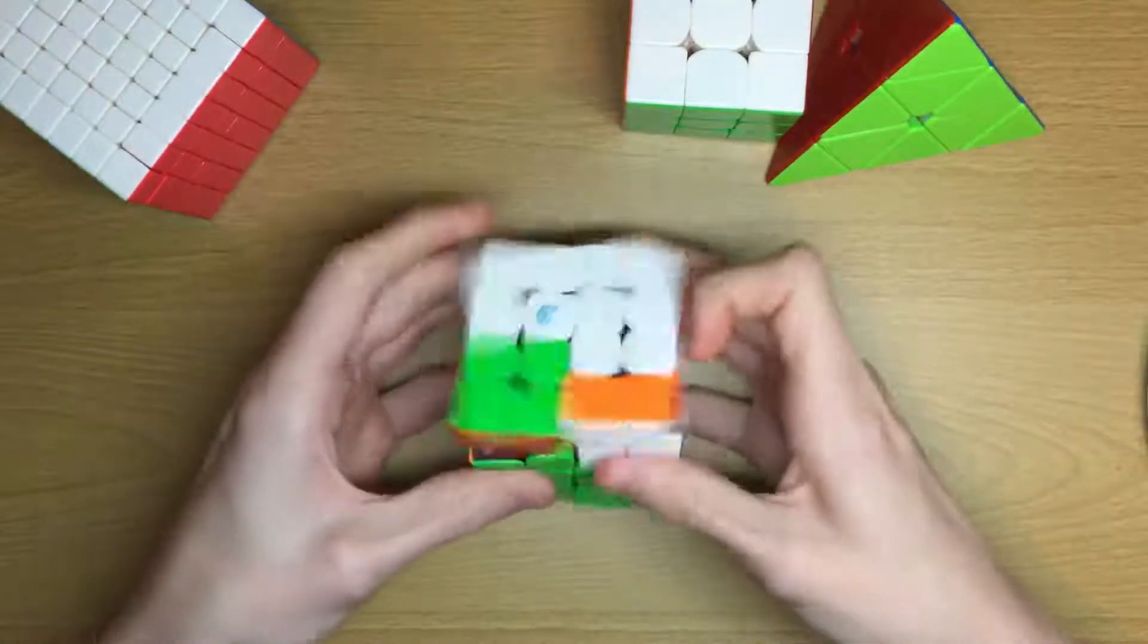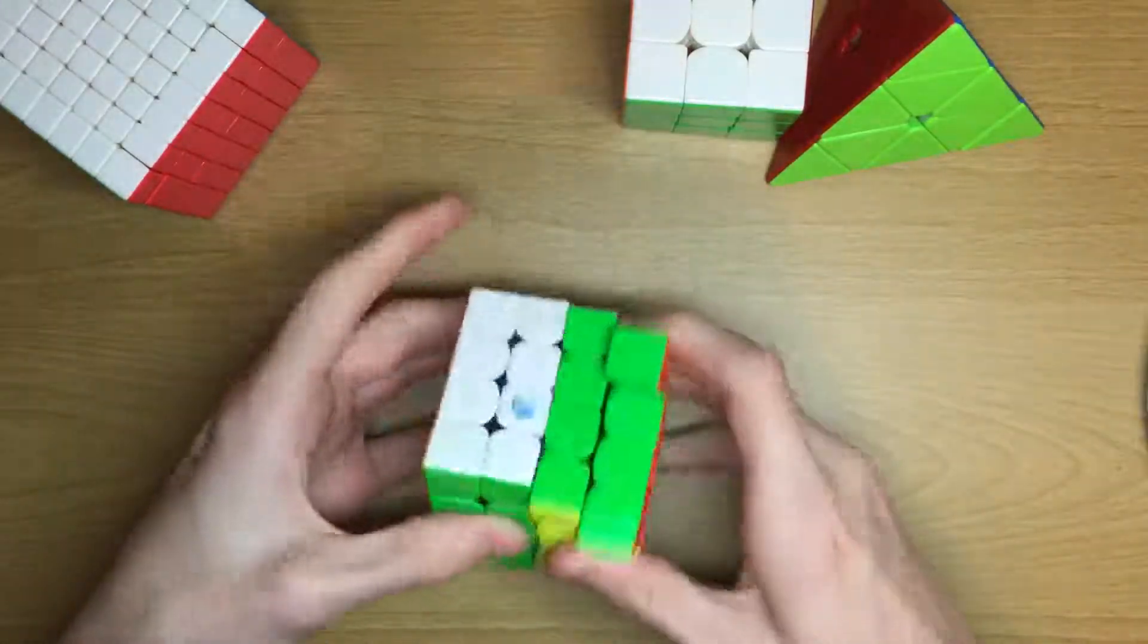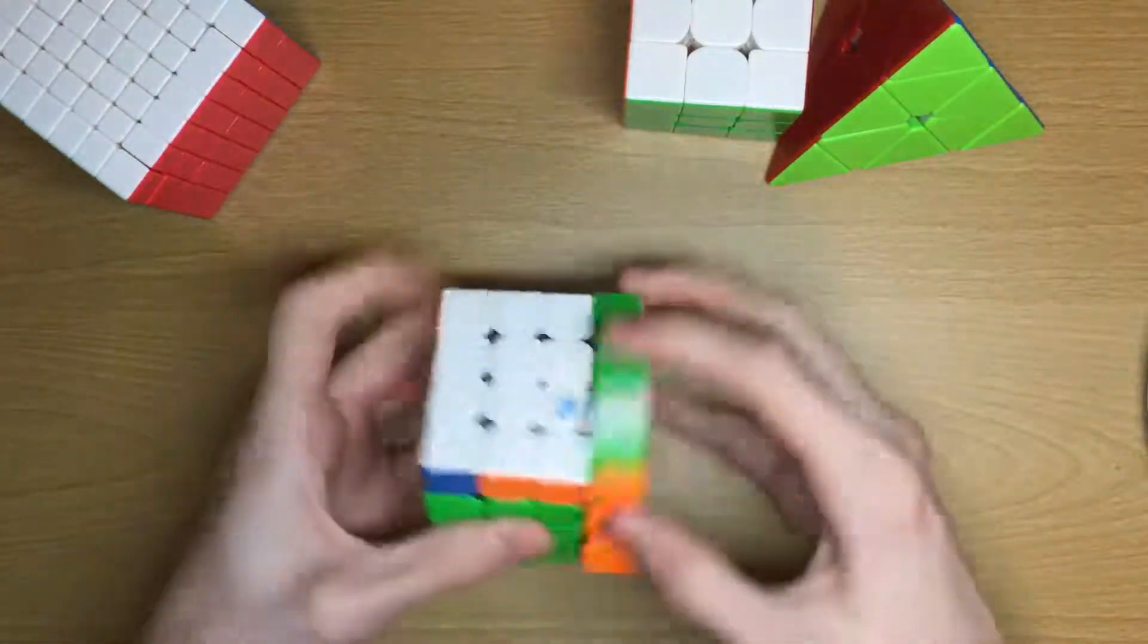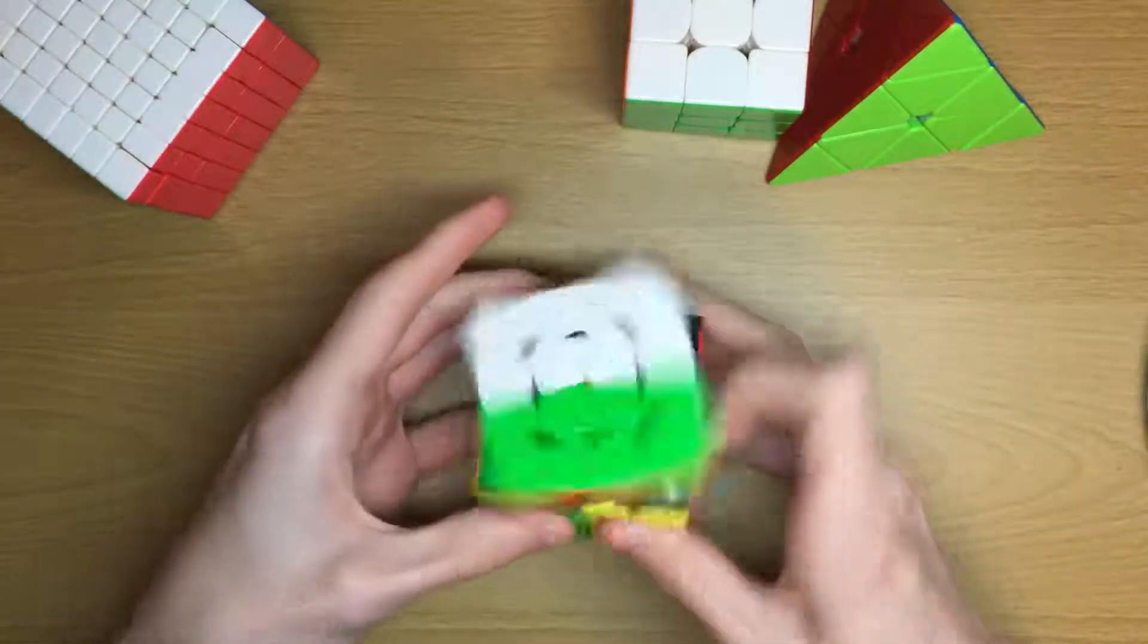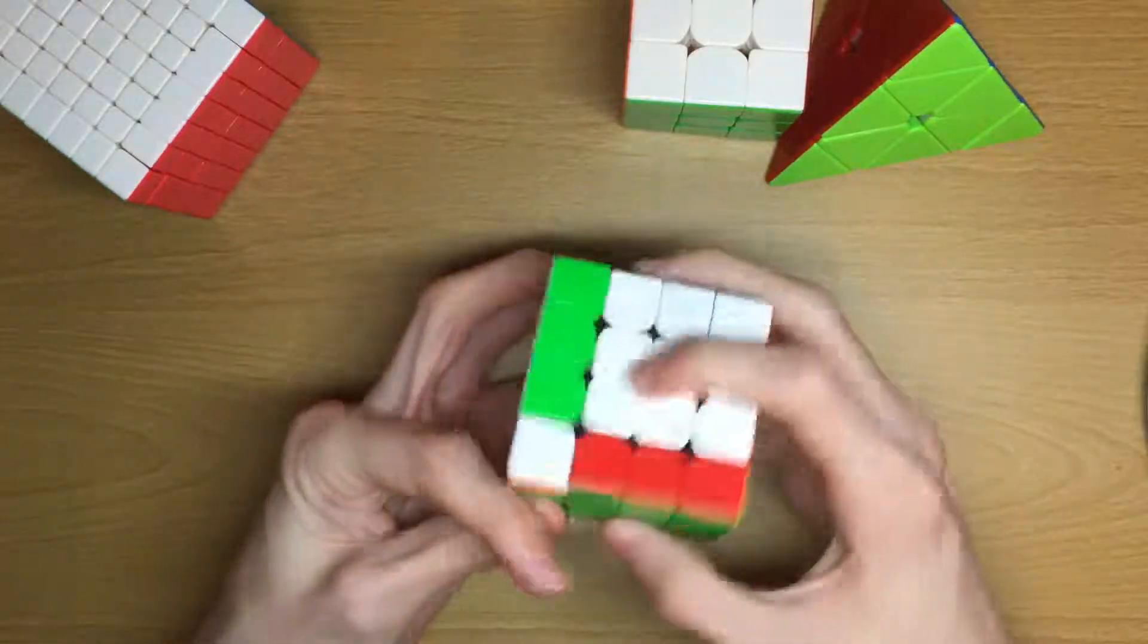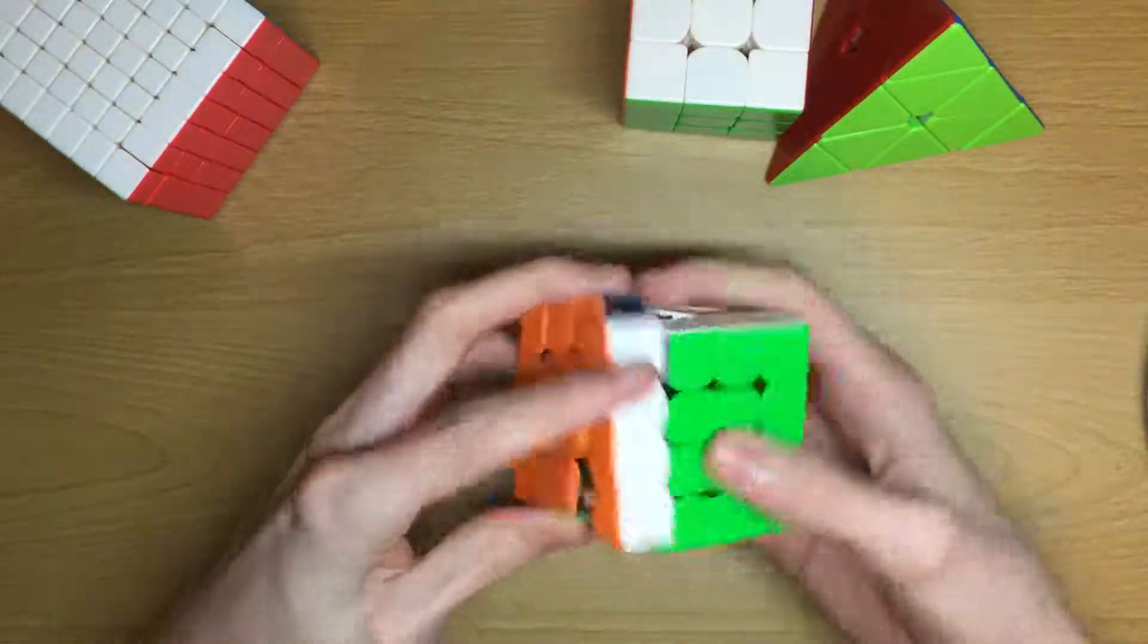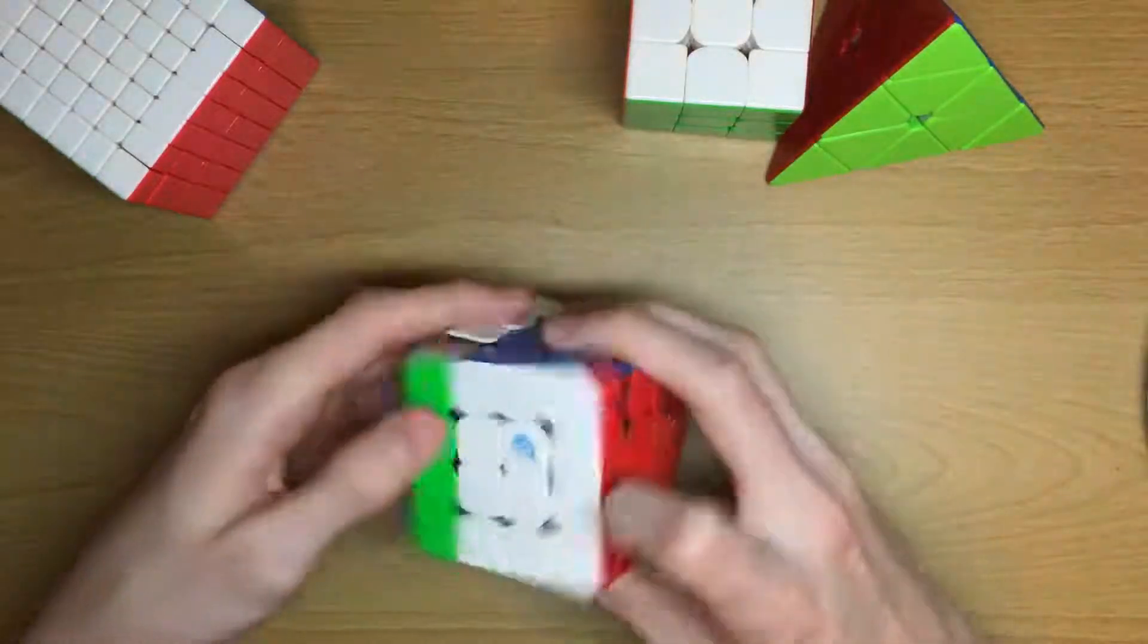For 4x4, I'd like to get a sub-46 average and sub-40 single using this Wuque 4x4. I've really grown to like it. It fits my turning style very well. Still would be nice to get some good results on it.